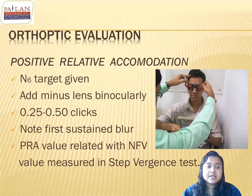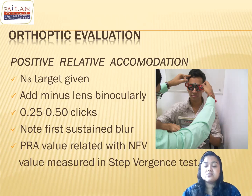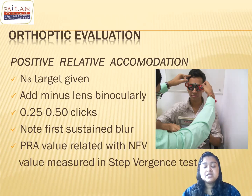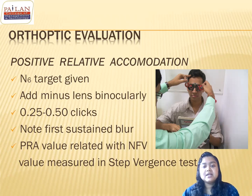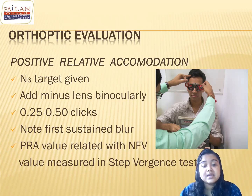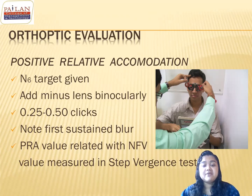NRA/PRA test is a very important test done in routine orthoptic evaluation — you cannot miss it because it gives a lot of information. The PRA value is also related to the NFP value found in the step-vergence test, which we will cover later. The PRA value and NFP value should correlate with each other.